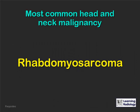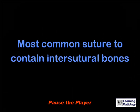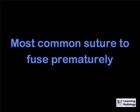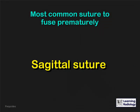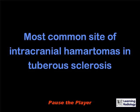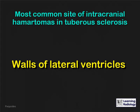What is the most common head and neck malignancy? A rhabdomyosarcoma. What is the most common suture to contain intersutural bones, wormian bones? The lambdoid suture. What is the most common suture to fuse prematurely? The sagittal suture. What is the most common site of intracranial hematomas in tuberous sclerosis? The walls of the lateral ventricles.